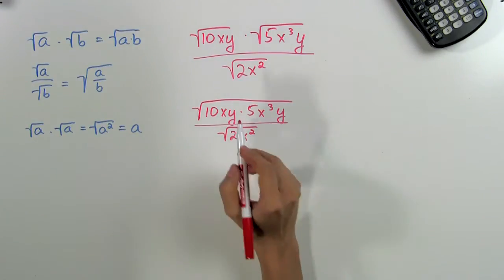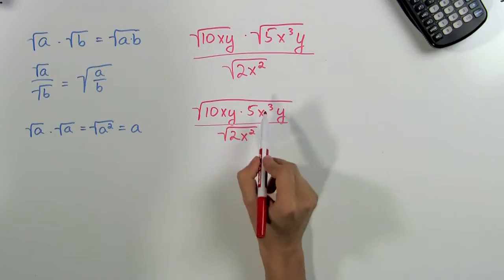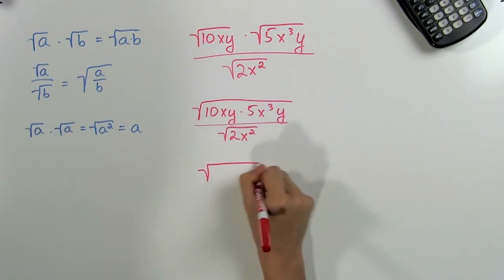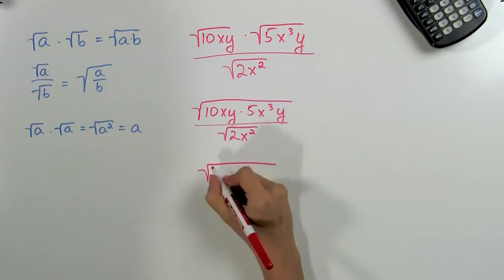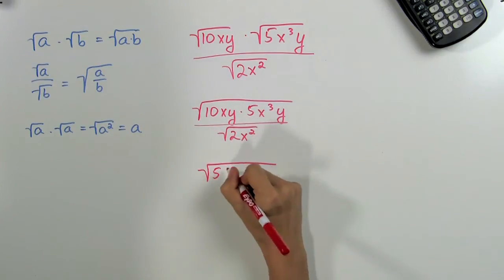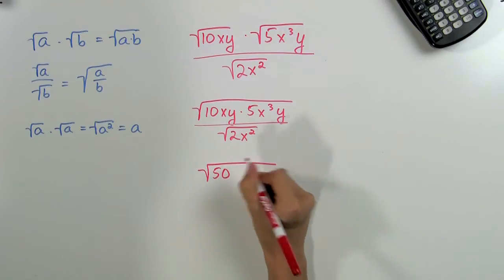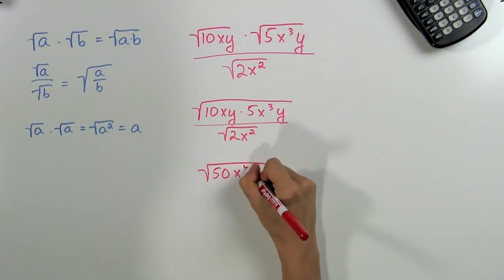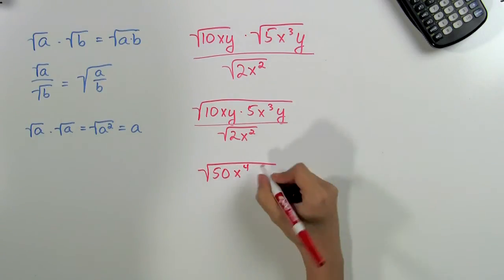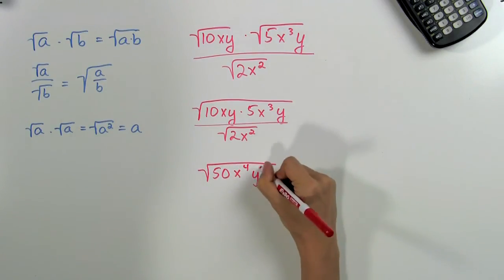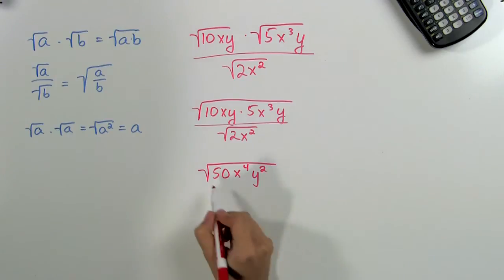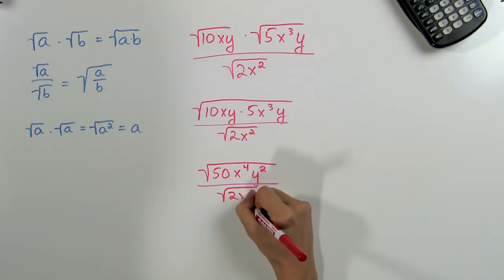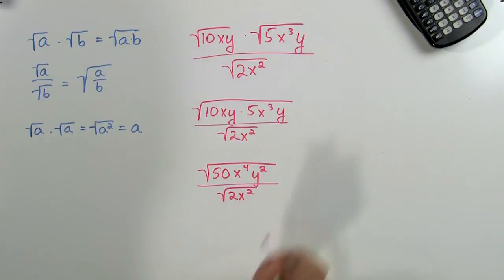So now we can multiply what's inside and we'll get the square root of 10 times 5 is 50, x times x cubed is x to the fourth, and y times y is y squared, divided by the square root of 2x squared.